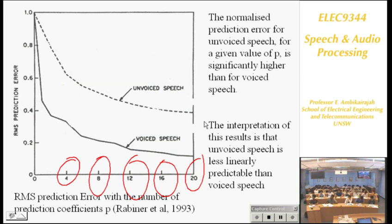Here is an example of the RMS error plotted over many frames, depending on the number of poles: 4, 8, 12, 16, 20. What do you see from the graph? Increasing the poles decreases the error. But after 12, it kind of plateaus — there's no need for more. So selection of 12 poles is good. Unvoiced error is small; the model is not perfect for unvoiced.